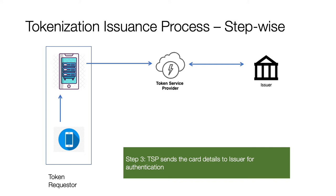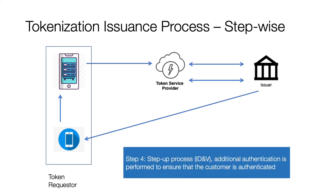Between the token requester and the TSP there is a token eligibility check, which works along with the issuer. The issuer then performs an ID validation — the step-up process — where an OTP or a call is sent to the token requester to validate whether the customer is valid. The mobile number resides only with the issuer's database, so the TSP sends an eligibility request to the issuer, the issuer sends the OTP to the token requester, and that OTP is checked back by the TSP. All these processes — from the token requester to the TSP to the issuer — together form the token assurance process.